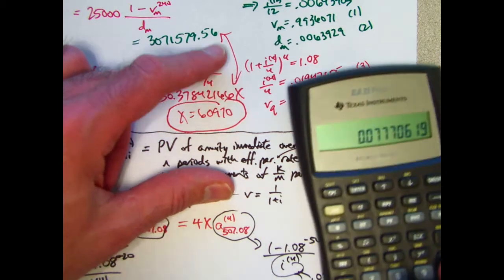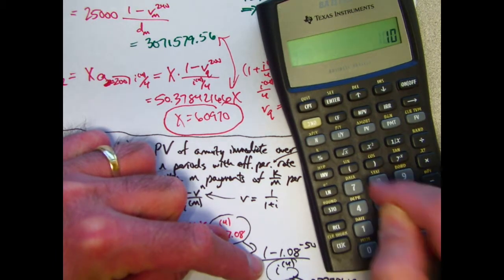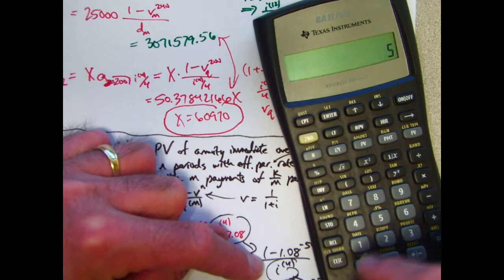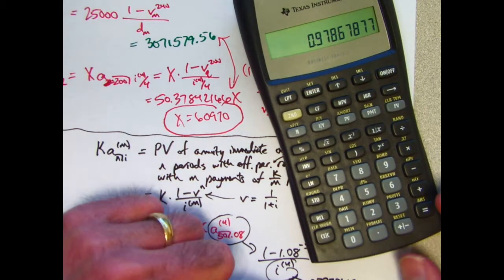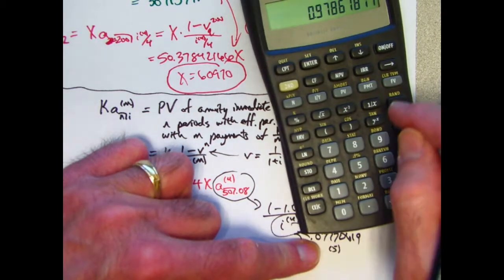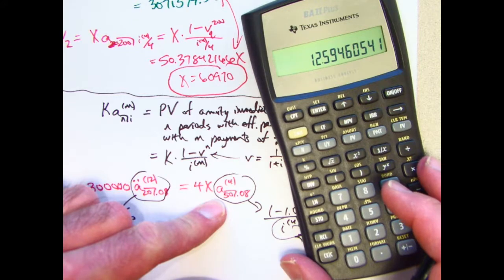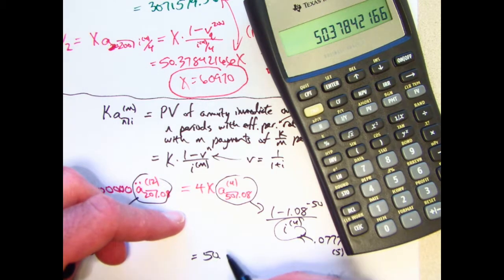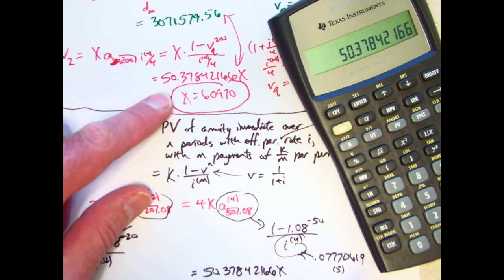So this number right here is going to be 0.07770619. You can see on the calculator there. That's what I have to divide by. Let's go ahead and store that and register 5. Store 5. Okay, take now 1.08 to the negative 50th power. 1.08 power 50 negative. Subtract that from 1. Divide by this number, which is in register 5. This thing here equals about 12.5946. I need to multiply it by 4. And what do I get? I get 50.37842166x, which is exactly the same thing as I have up there.